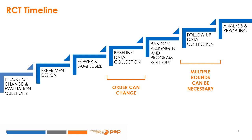RCT timelines can vary due to differences in the type of intervention being studied and the availability of previous data. The first step is to define a theory of change that explains exactly how the intervention will affect outcomes and the specific question that the evaluation is set to answer.